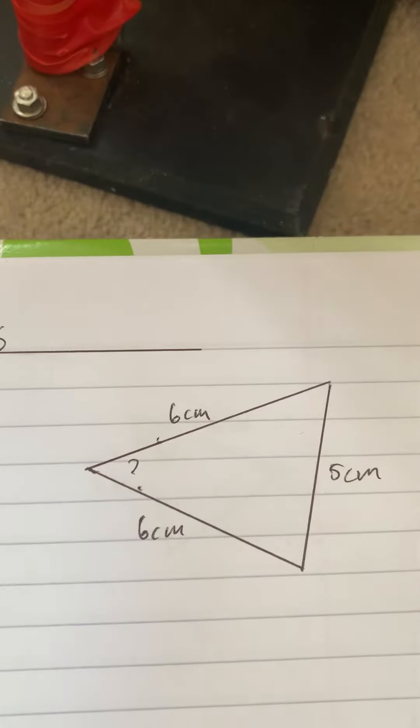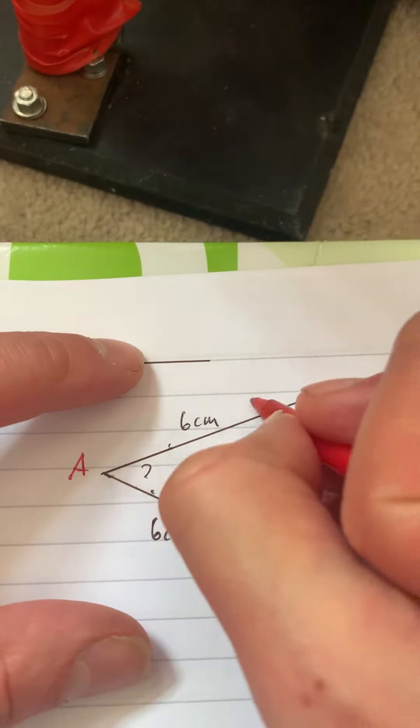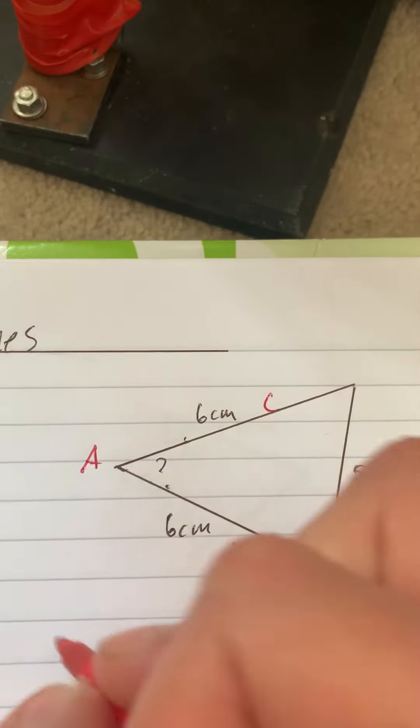Okay, we do the same with the next one. We label this as A, lowercase a. We can call that one b and c, it doesn't matter. Now we're substituting into our formula.